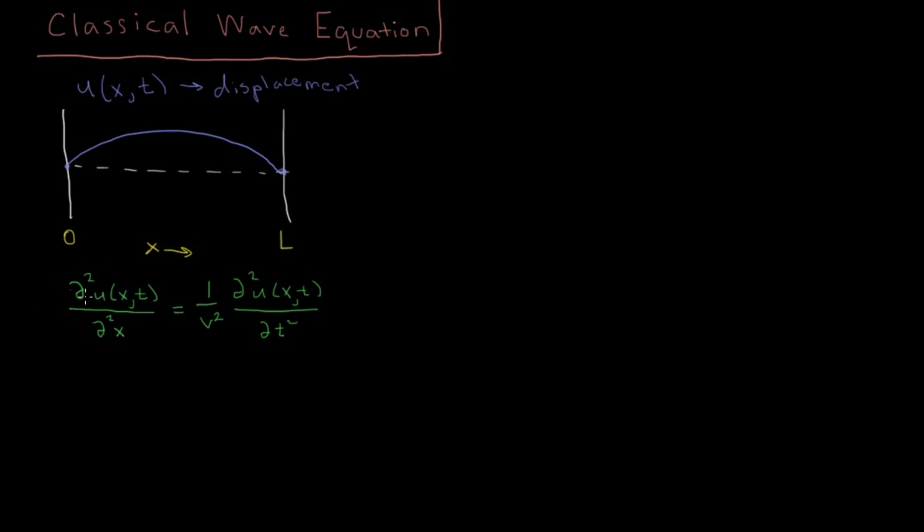So this equation, we have the second partial derivative with respect to position equals 1 over velocity squared second partial derivative with respect to time. So in order to solve a PDE like this, what you'll normally do is try to use a technique called separation of variables. We're going to try to separate this function into two parts, one function which depends only on x, depends only on position, and one which depends only on time, t.